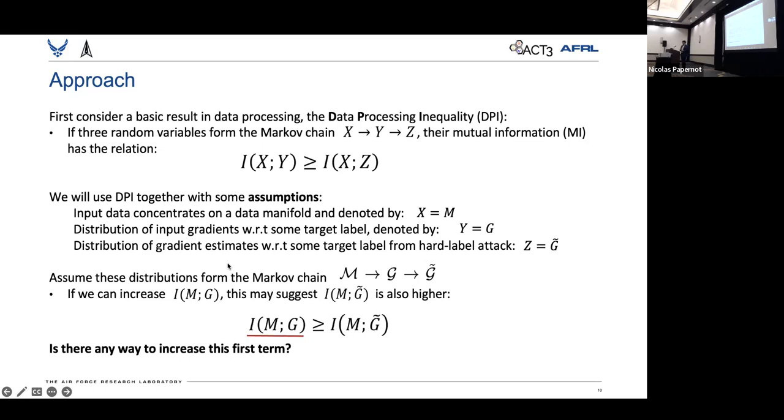This would be nice because we know that if this is true, we could generate on-manifold adversarial examples, and these are actually known as generalization errors. So now what we're concerned is how do we increase this first term?